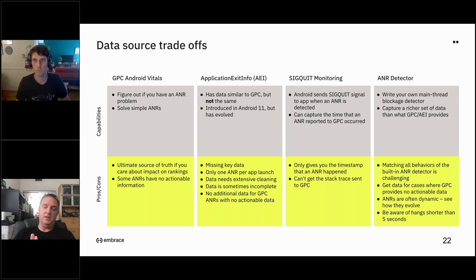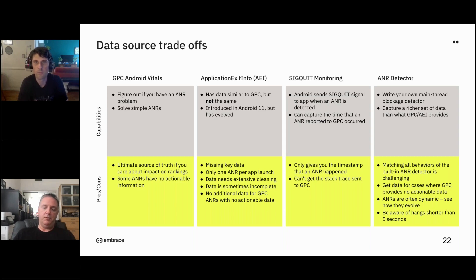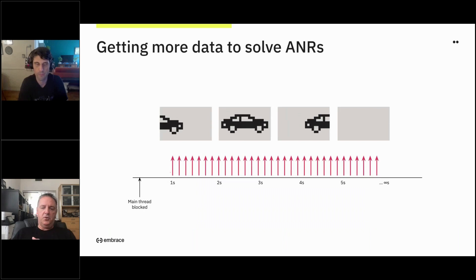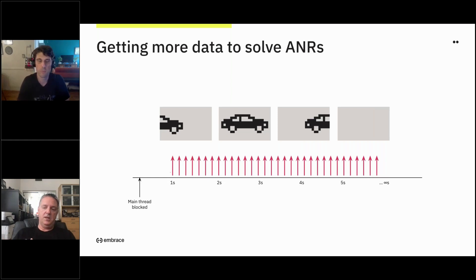There are also some other benefits: five seconds is a fairly arbitrary duration for a hang. If you look at what customers are willing to put up with — sure, maybe they'll tolerate a five-second hang every once in a while, but if you have three-second hangs all over the place, that's going to frustrate people and they will probably vote with their feet and leave. If you do build your own ANR detector, you're effectively getting more data to try to solve the ANRs. Going back to the analogy of the moving car — instead of getting just one picture, here we can get all of them and use all that data on the back end to present a more accurate picture of what's going on.